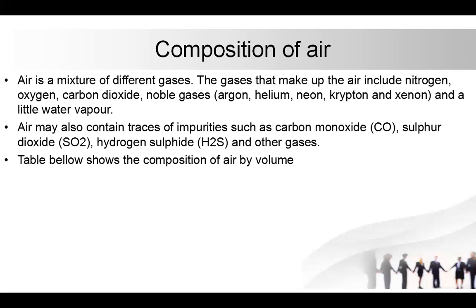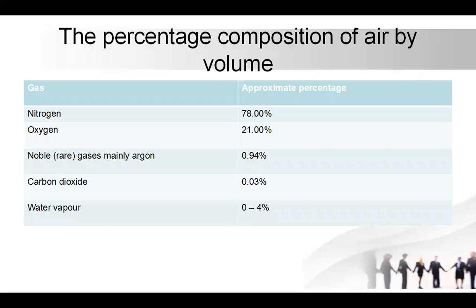The following table shows the composition of air by volume. Here you see the table, which places the gas and the appropriate percentage. Nitrogen is basically 78%, oxygen is 21%, argon is 0.94%, carbon dioxide is 0.03%, and water vapor ranges from 0 to 4%, which varies from place to place at different times. As you can see, nitrogen is the one that occupies the largest percentage in the air.